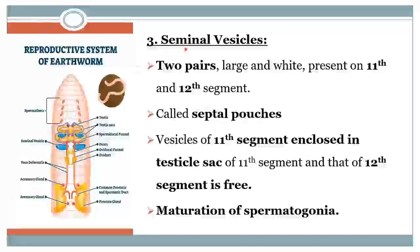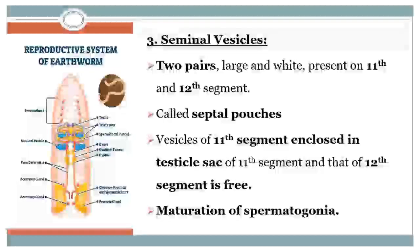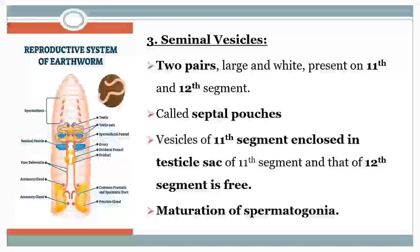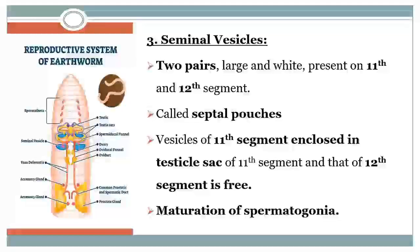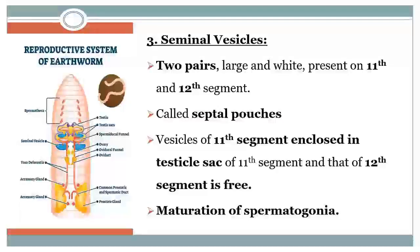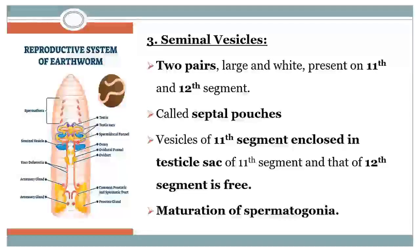The next part is the seminal vesicles. The seminal vesicle is also a white colored, wider, large part which is also in a pair and which is present in the 11th and 12th segments. It is also called as septal pouches because it is originated from the outgrowth of the septum. The 11th seminal vesicle is enclosed in the testes sac while the 12th one is free. In the seminal vesicle, the maturation of the spermatogonia into the sperm takes place.